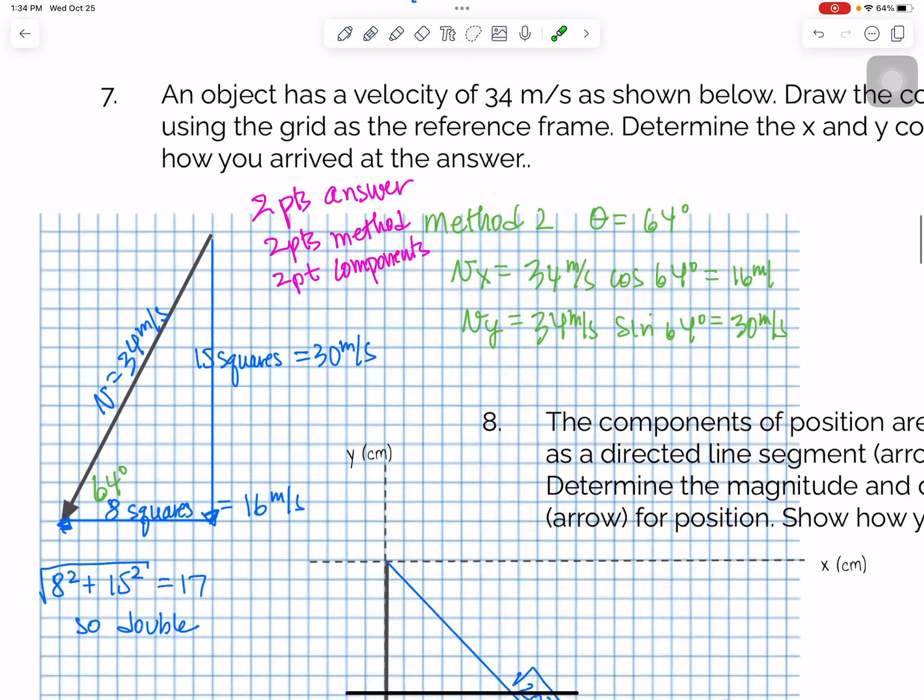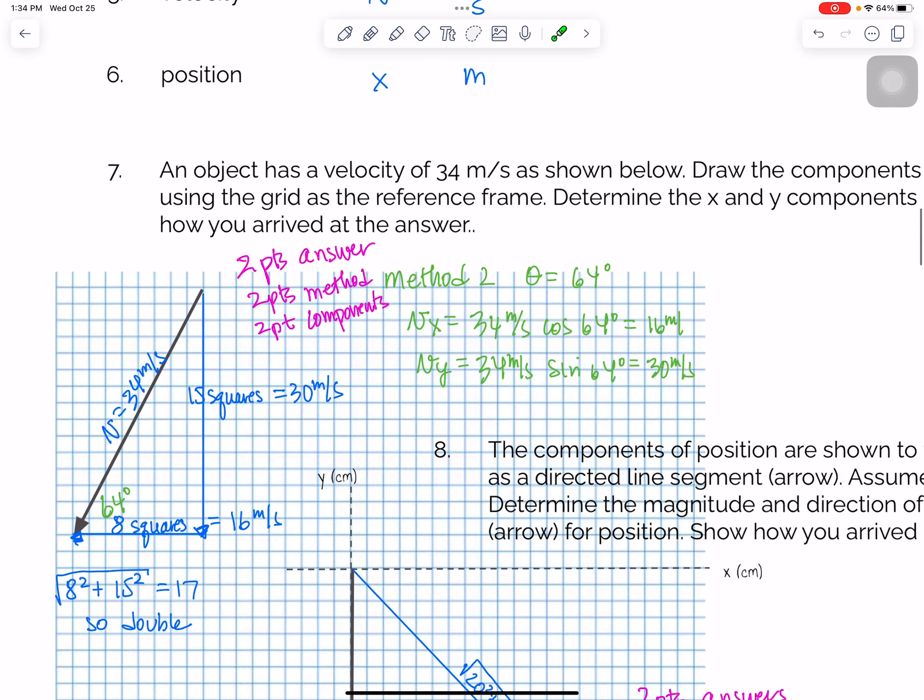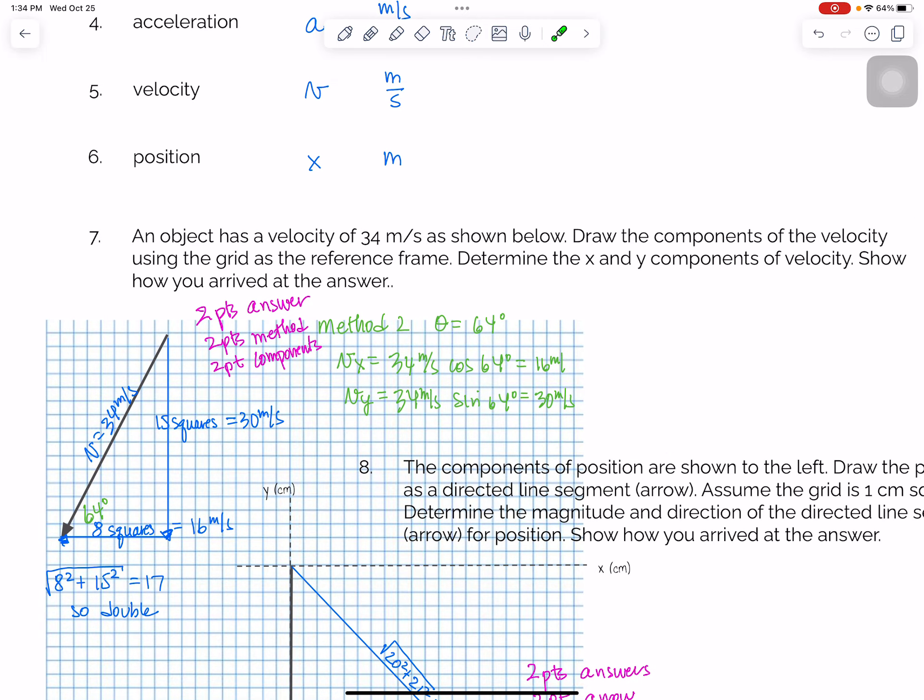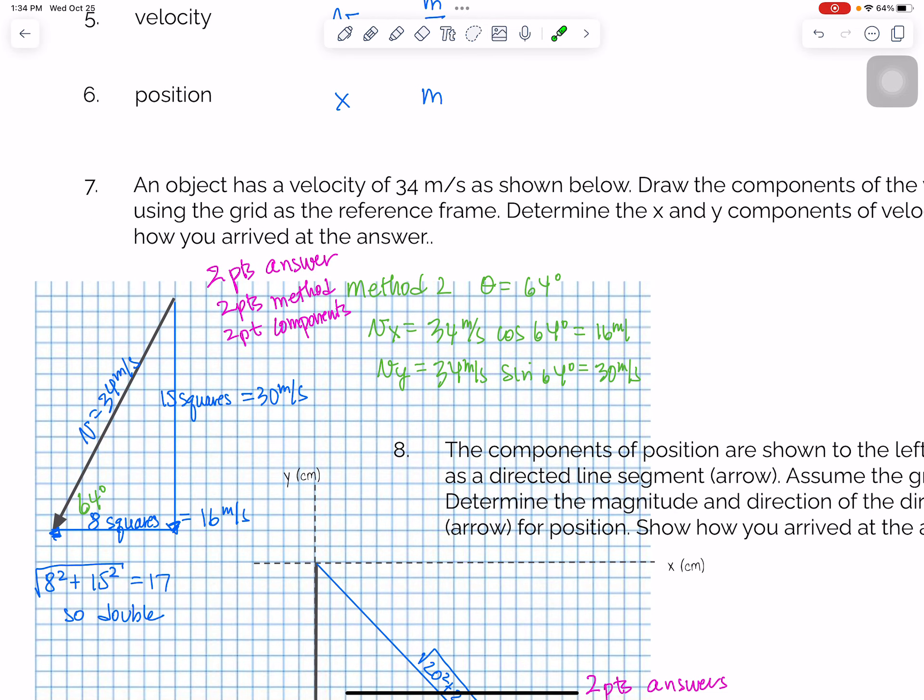Okay, for the next one, an object has a velocity of 34 meters per second, so this vector represents 34 meters per second. And you were supposed to draw the components of the velocity, and so all I wanted you to do was to make a right triangle. So one component that way, one component that way. Some of you drew the components up here, and that was perfectly fine, as long as you had components at right angles. So you draw the components with arrows, because components are directed line segments, and that got you 2 points.